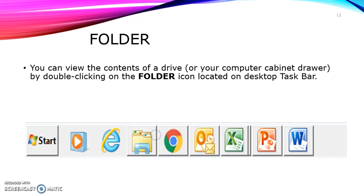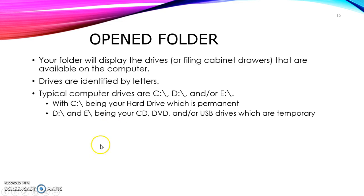You can view the contents of a drive — your computer cabinet drawer — by double-clicking on the folder icon located on the desktop taskbar. This icon here. Your folder will display the drives, or your filing cabinet drawers, that are available on your computer.